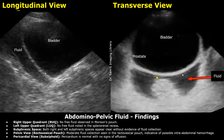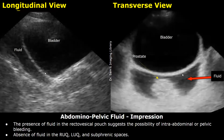Findings — Right upper quadrant: no free fluid observed in Morrison's pouch. Left upper quadrant: also normal. Subphrenic spaces: both normal. Pelvic view — recto-vesicle pouch: moderate fluid collection seen in the recto-vesicle pouch, indicative of possible intra-abdominal hemorrhage. Pericardial view: also normal.